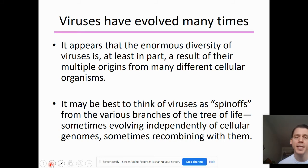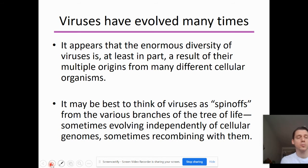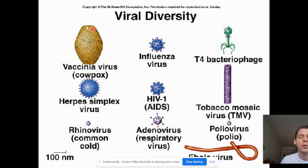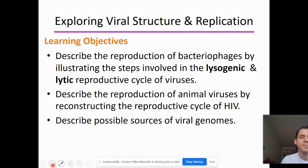It appears that viruses have evolved many times throughout the history of life, from many different organisms. This could be why viruses may only infect certain living things — a certain species of plant, animal, or bacteria — because those viruses might have evolved from ancestors of those organisms. It may be best to think of viruses as spin-offs from various branches of the tree of life.